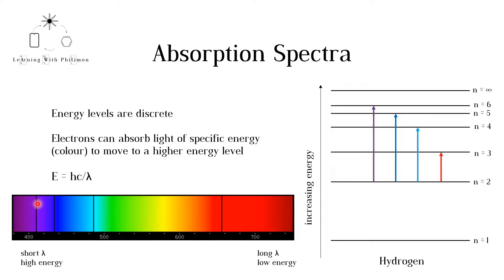In the diagram, only 6 energy levels are included, although there are more. The last line is labeled as infinite. If an electron absorbs energy to reach this point, it means it has left the atom. This is called ionization and will be discussed in the bonding and periodicity playlists.